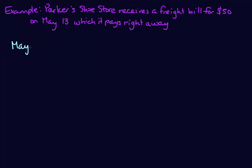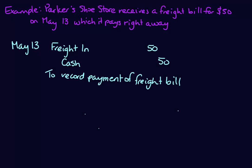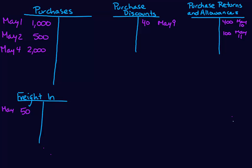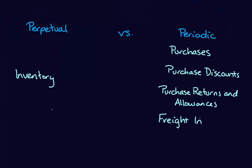Continuing with freight costs: when we receive a freight bill — in this case for $50 — and pay it right away, under the perpetual method we would have debited Inventory. Under the periodic method, we use an account called Freight In. So under the periodic method, instead of just one Inventory account, we have: Purchases, Purchase Discounts, Purchase Returns and Allowances, and Freight In.